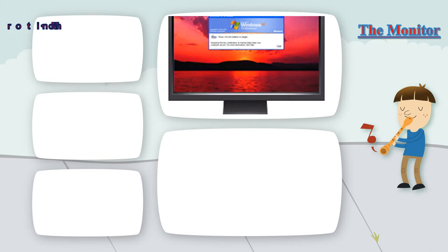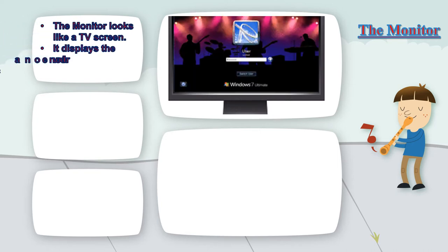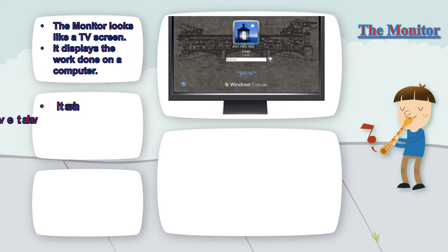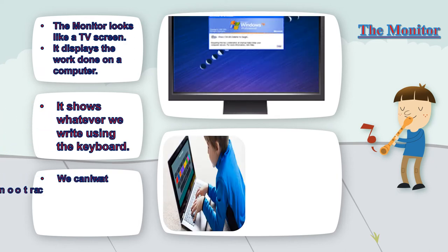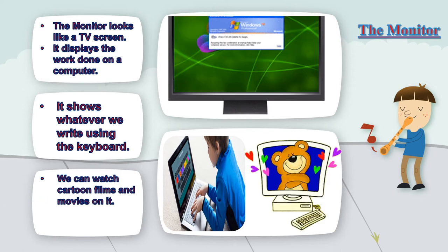So first part is the monitor. The monitor looks like a TV screen. It displays the work done on a computer. It shows whatever we write using keyboard. We can watch cartoon films and movies on it. We can also play games on it.